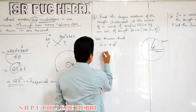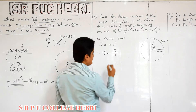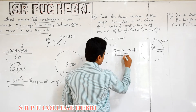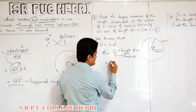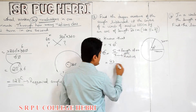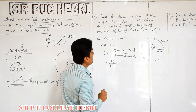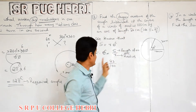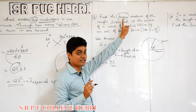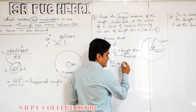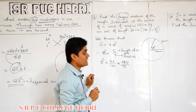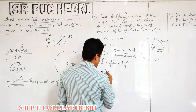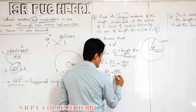S equals R theta radian. S and R are given, so what is required is theta radian. Therefore theta radian equals S by R. S is the length of the arc, which is 22 centimeter, divided by radius 100. But we want to measure the angle in degree format. So convert to degree: multiply by 180 by pi. Using pi equal to 22 by 7, substitute: 22 by 100 into 180 into 7 by 22. The 22s cancel and the zeros cancel.